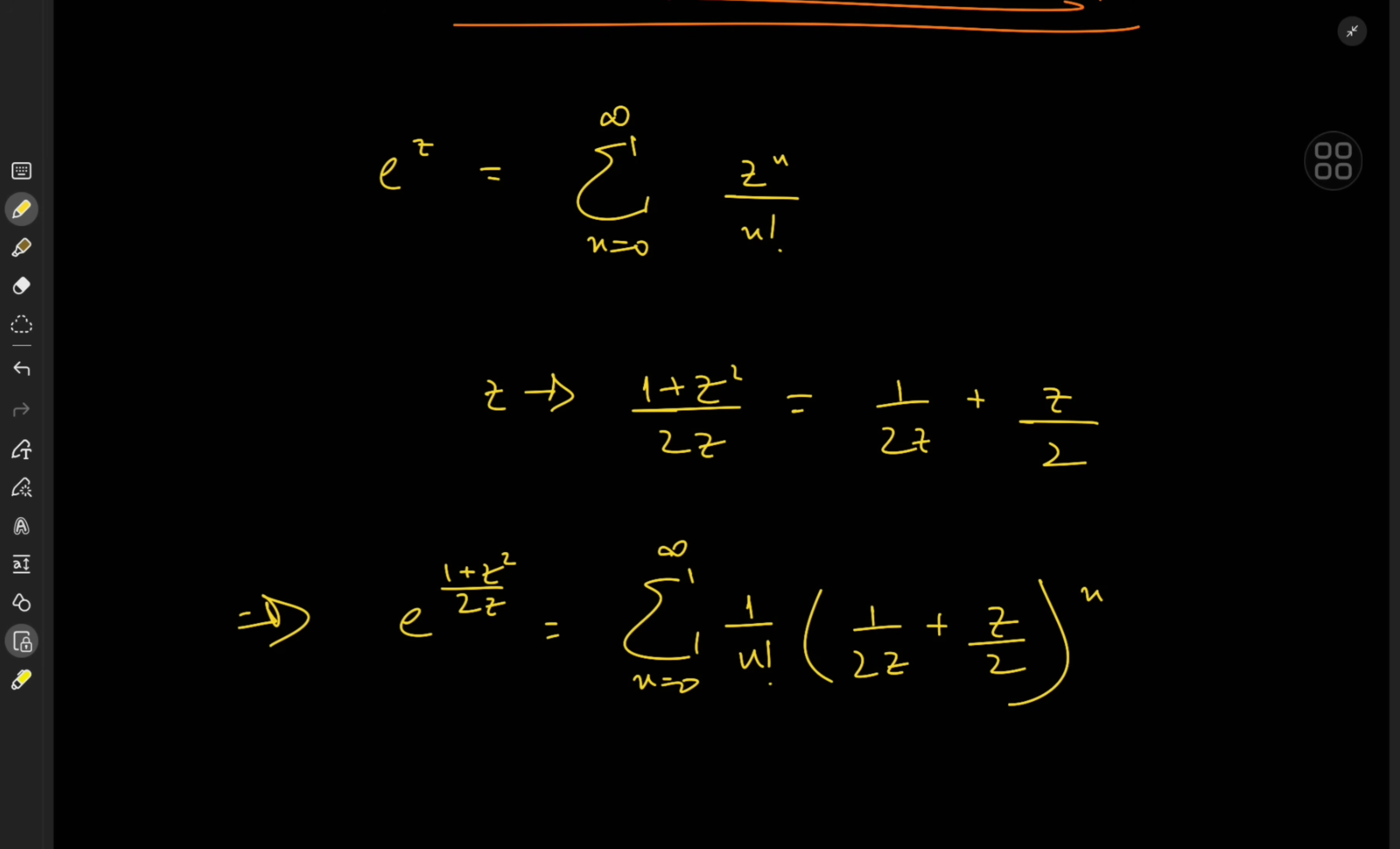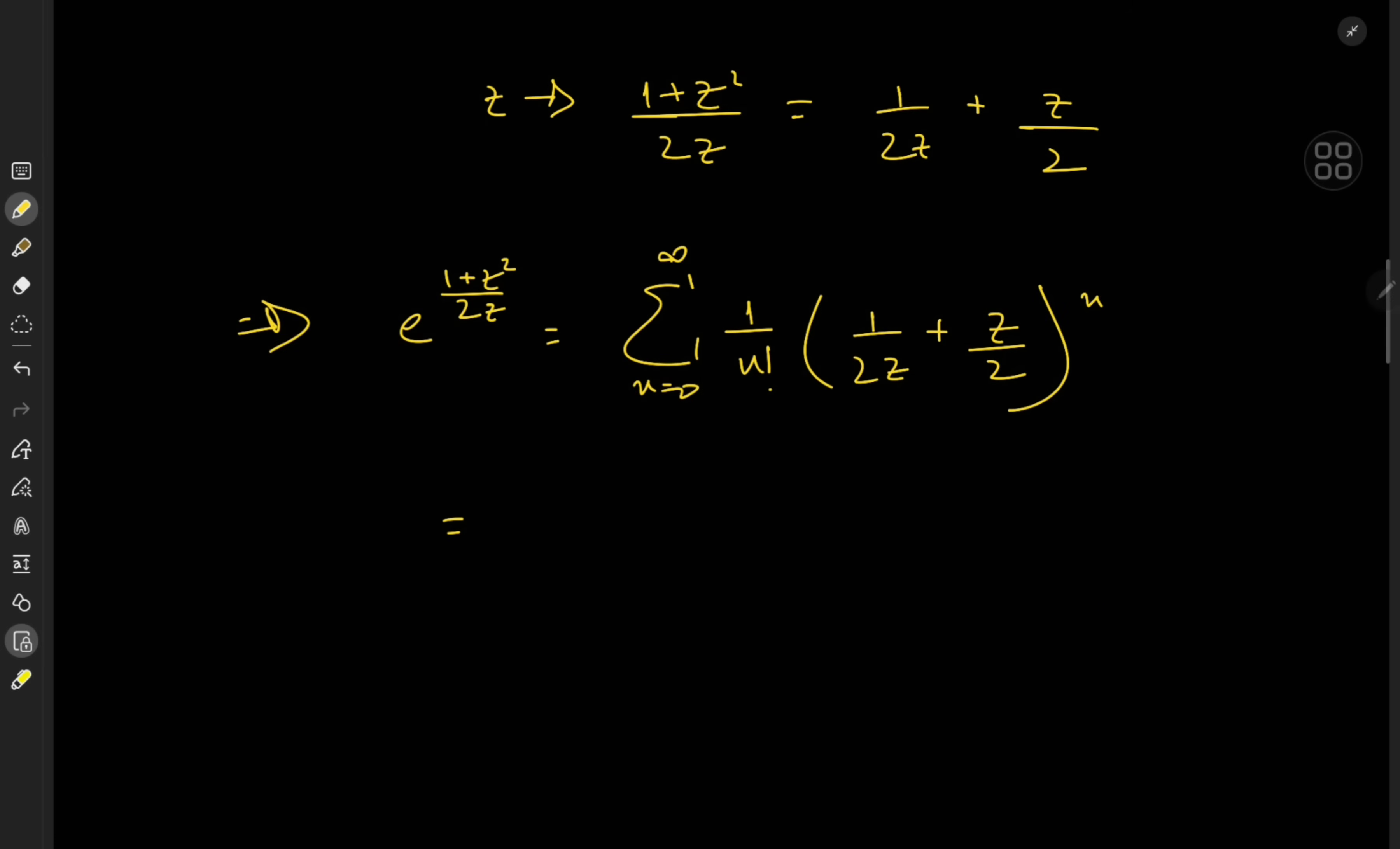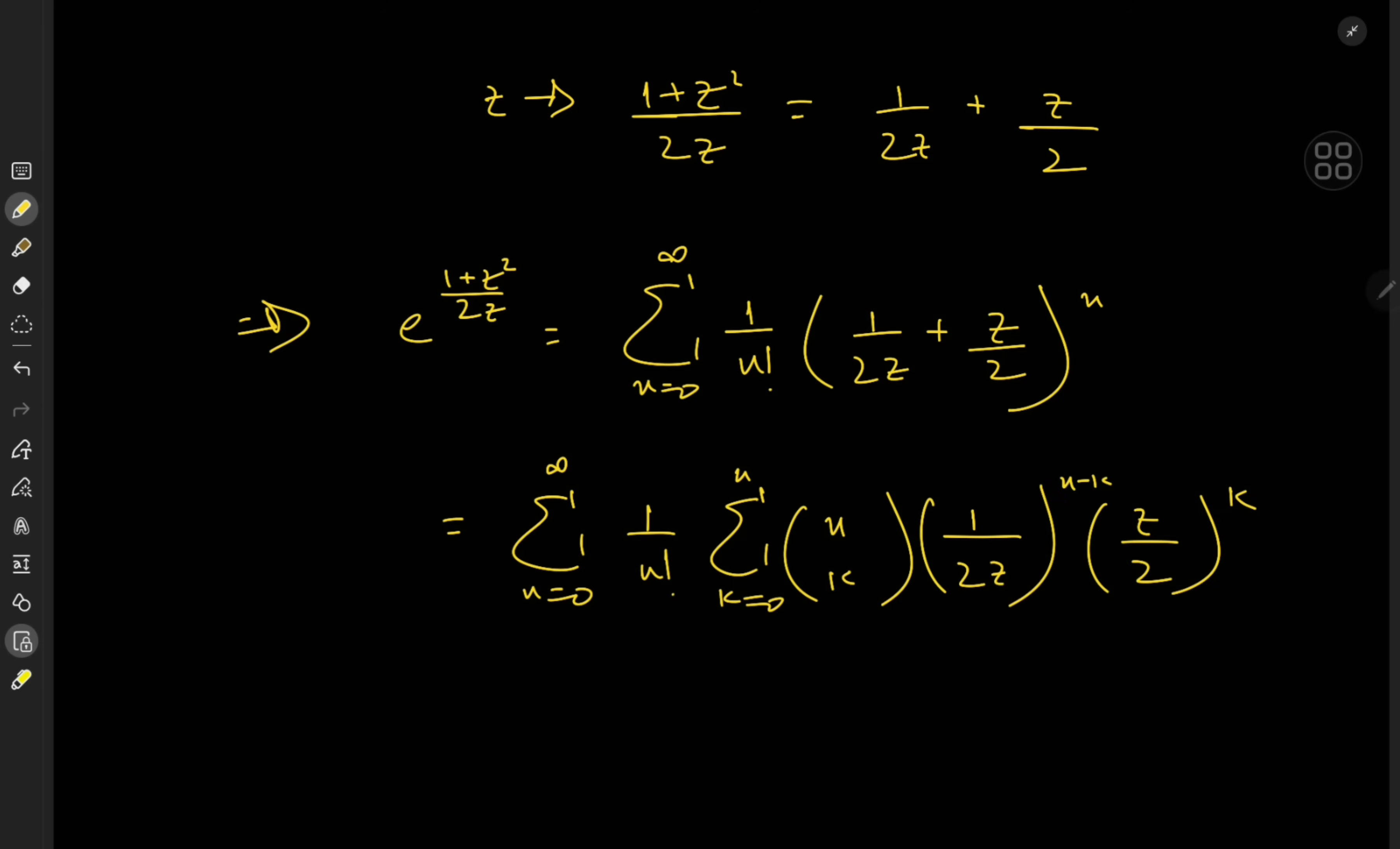So we have the sum over n from 0 to infinity, 1/n!, and the sum over k from 0 to n, of (n choose k) · (1/(2z))^(n-k) · (z/2)^k.